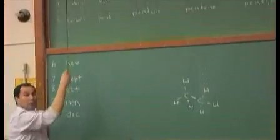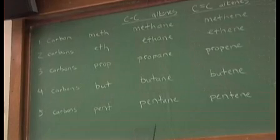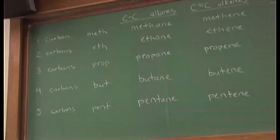And that brings us up to eth. Prefix for two carbons in chemistry is eth. Unfortunately, it's nonstandard. We don't use, like, di or something meaning two, but eth means two. Ethane, single bonds. There it is.